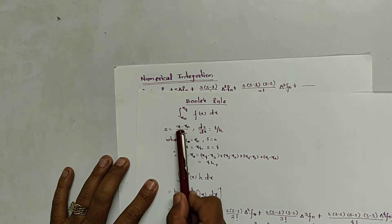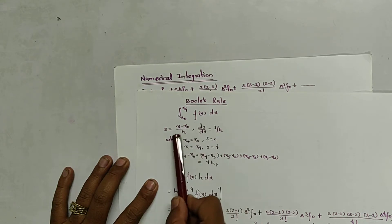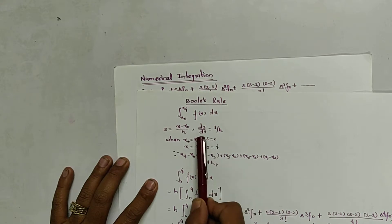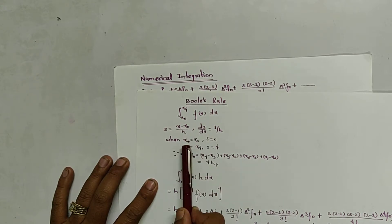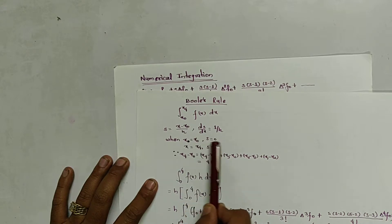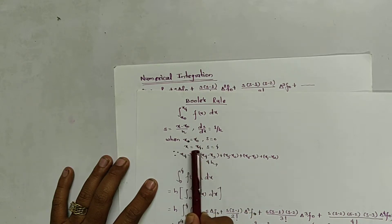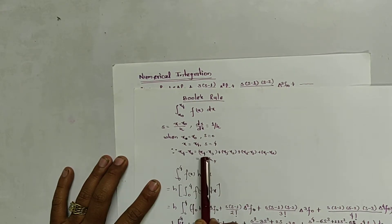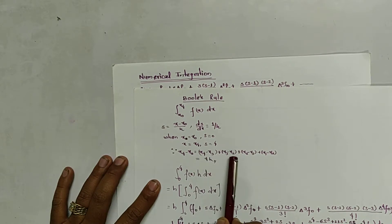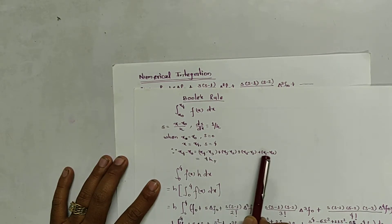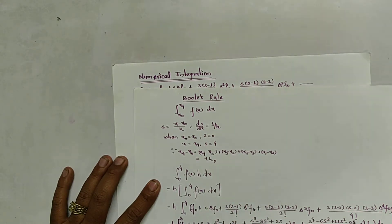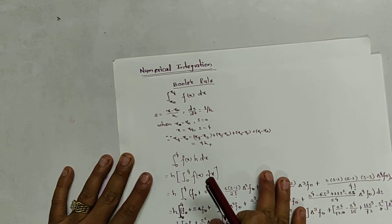We know that s is equal to (x minus x0) by h, and when we take the derivative with respect to s, then ds by dx equals 1 by h. So dx equals h ds. When x equals x0, s equals 0. When x equals x4, s equals 4, because x4 minus x0 equals (x4 minus x3) plus (x3 minus x2) plus (x2 minus x1) plus (x1 minus x0), which is 4h. So 4h by h is 4.